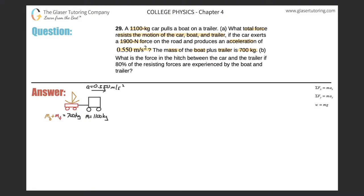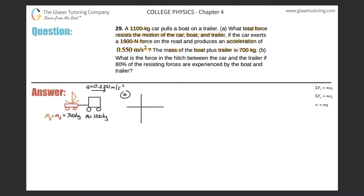The question asks what force resists the motion of the car, boat, and trailer as a whole system. So I'm looking at everything as one system and taking all the masses into account together. Let me draw a free body diagram — I'll label this part A. This point represents the entire system.